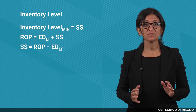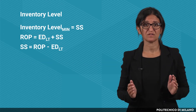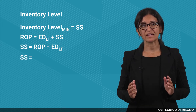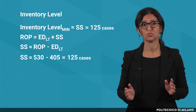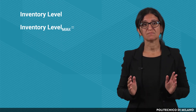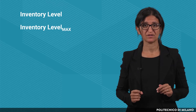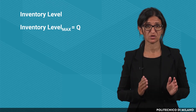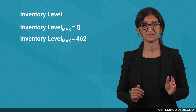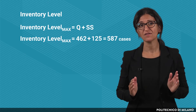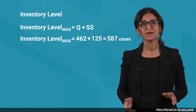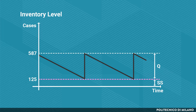Therefore, the value of the safety stocks — i.e., the minimum value of the inventory level — is calculated as 530 minus 405, equal to 125 cases. The maximum value of the inventory level is found by adding the order quantity Q to the safety stocks, resulting in 587 cases. The graph shows the pattern of the inventory level with the minimum and maximum values we have just calculated.